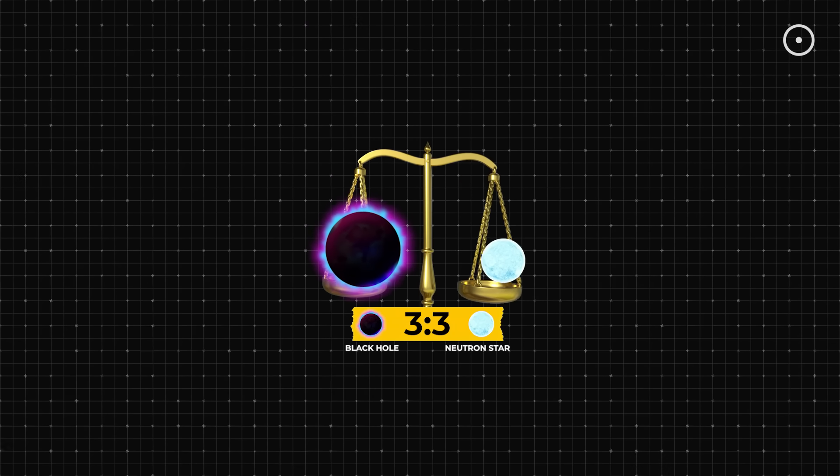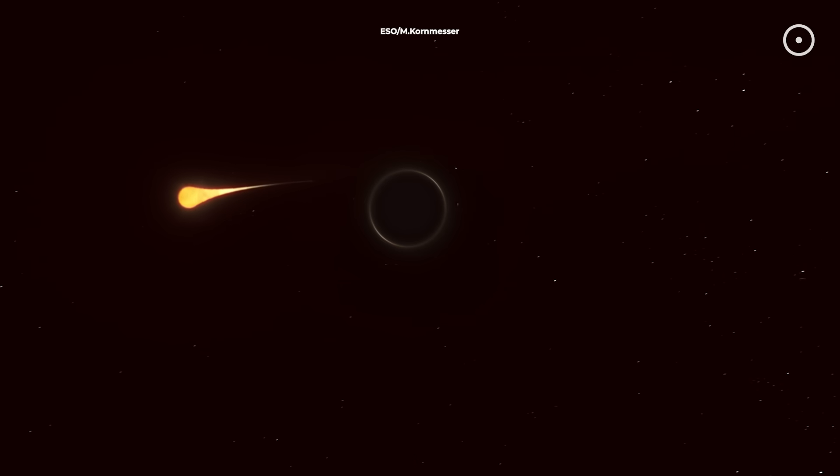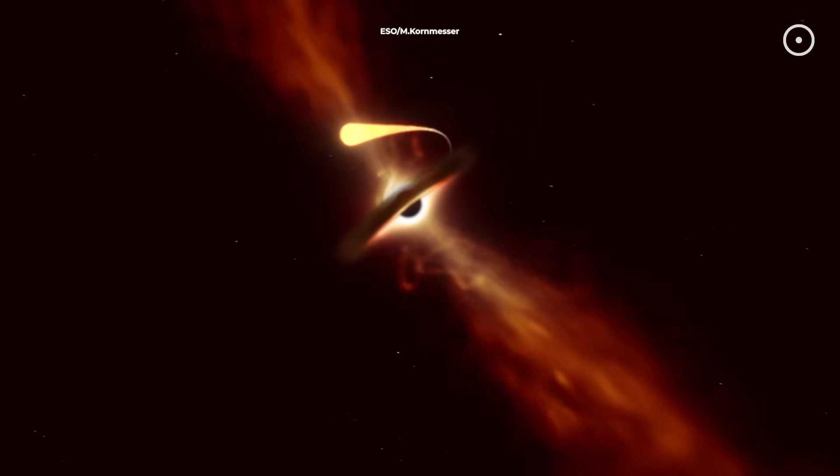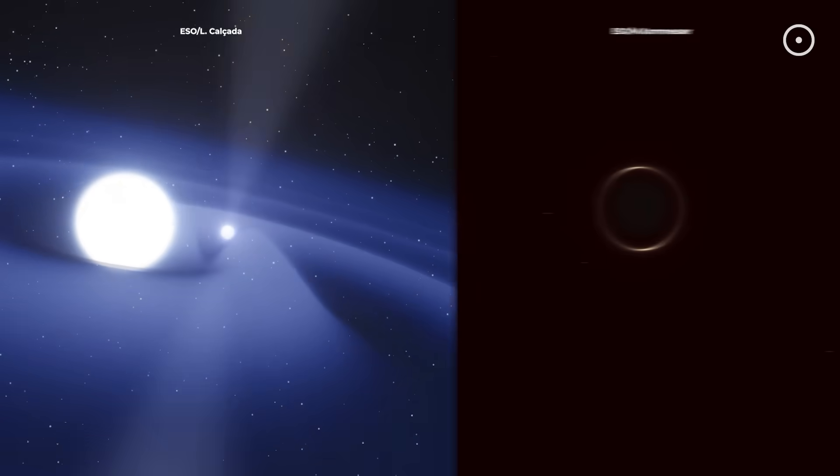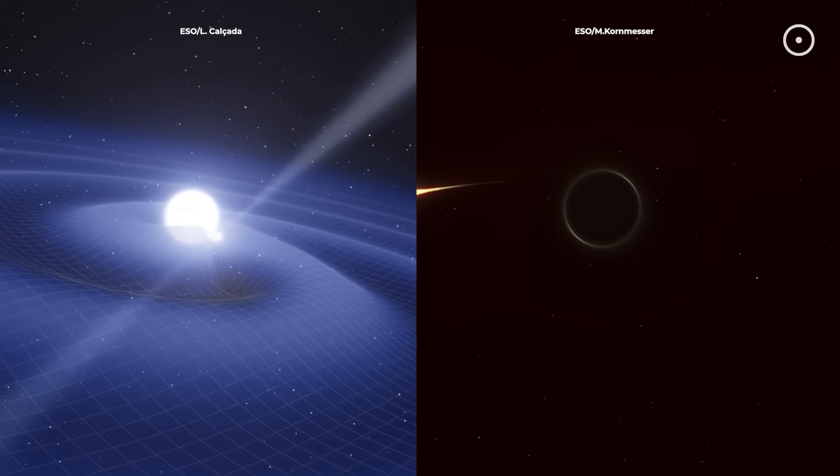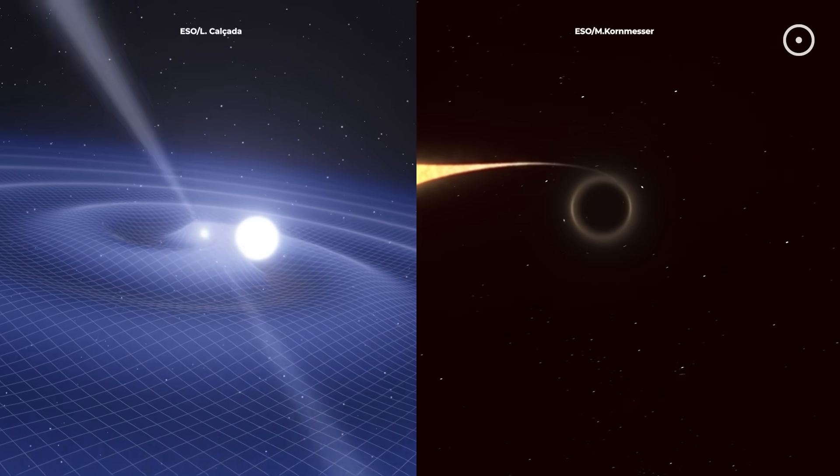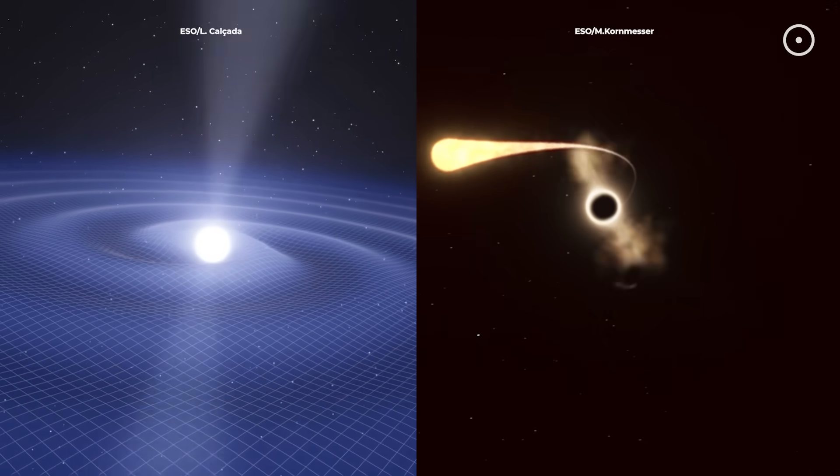So here we are at the end of our cosmic showdown. The score is 3 to 3. Black holes dominated in gravity and destruction radius, while neutron stars conquered density and weird behavior. The formation round was evenly matched. But here's the truth. Trying to crown a single champion might be missing the point.